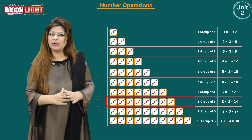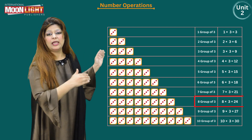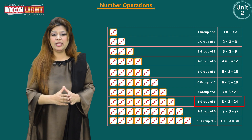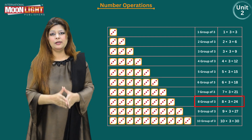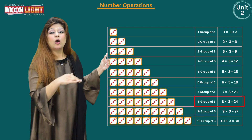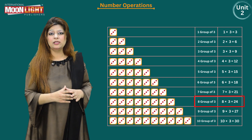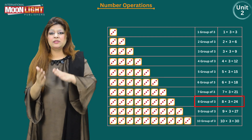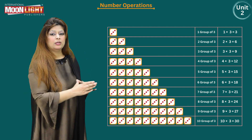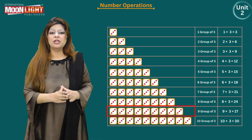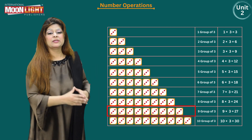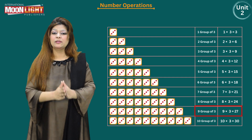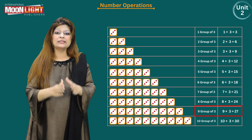Eight groups of three: eight multiplied by three. You can count all the dots together, or after 21 count three more — 22, 23, 24 — so eight times three is equals to 24. Nine groups of three: the number three repeats nine times, so nine multiplied by three is equals to 27.